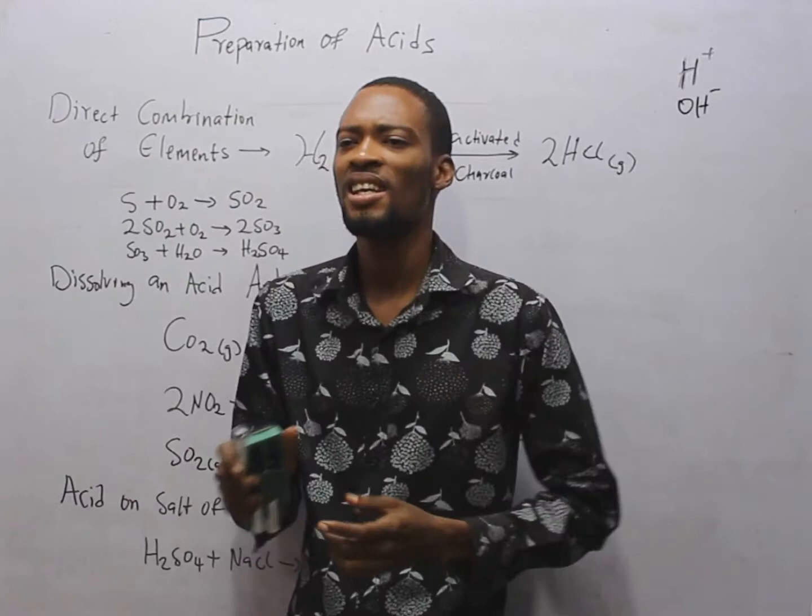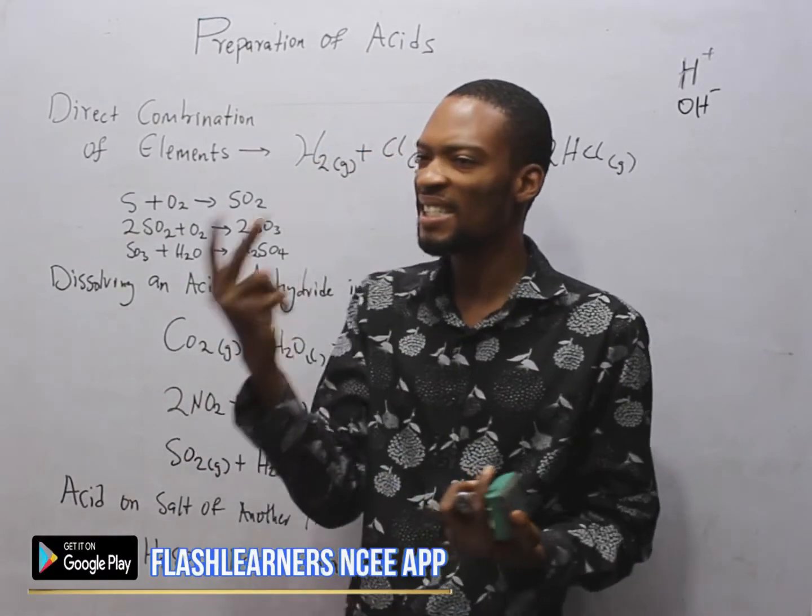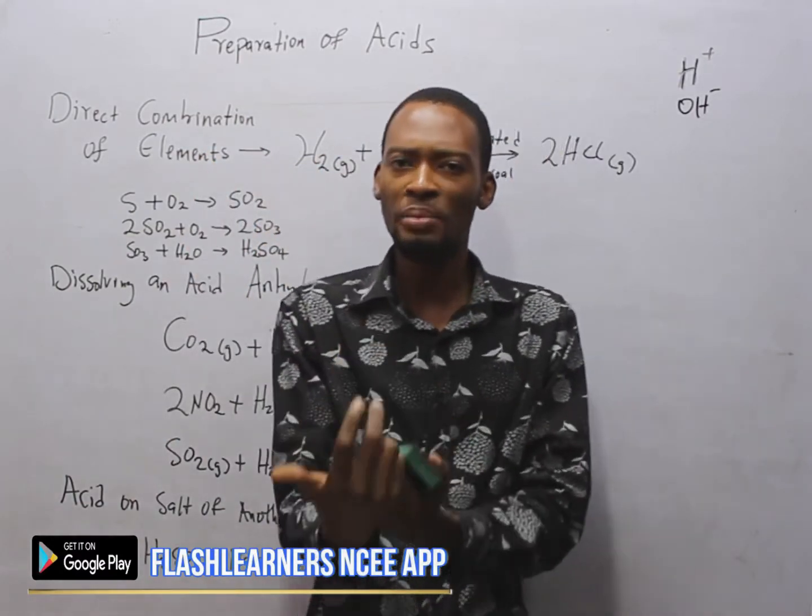Now, acids can be produced or prepared in three ways. One, by synthetic method. Synthetic method is also called direct combination of elements.